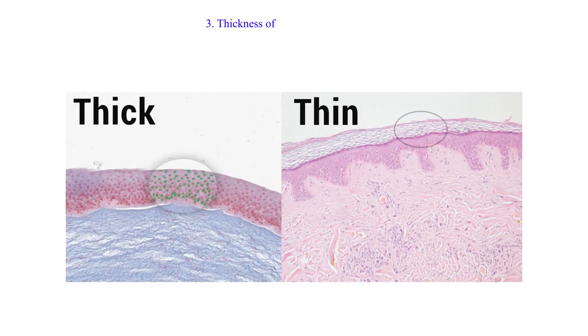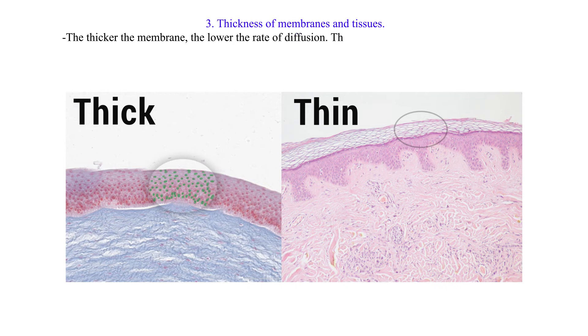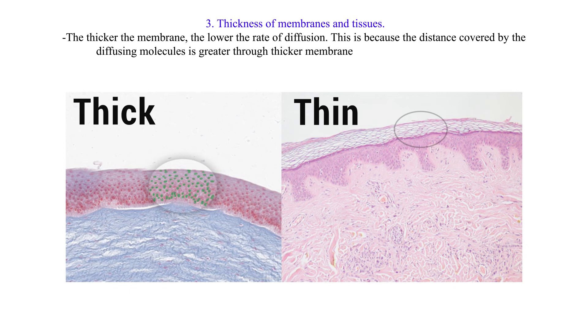3. Thickness of membranes and tissues: The thicker the membrane, the lower the rate of diffusion. This is because the distance covered by diffusing molecules is greater through thicker membranes compared to thin membranes.